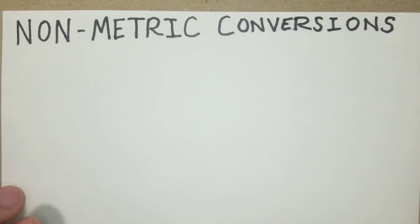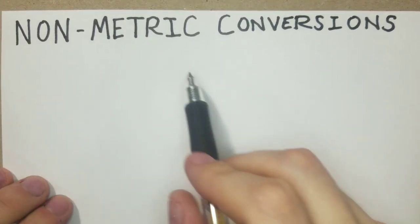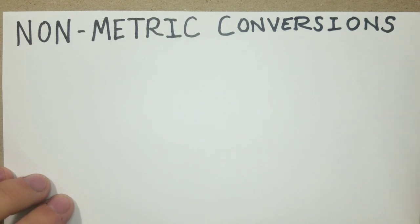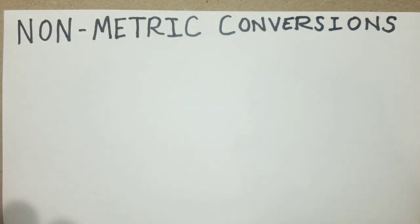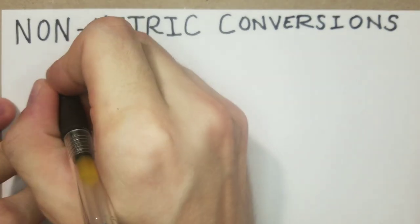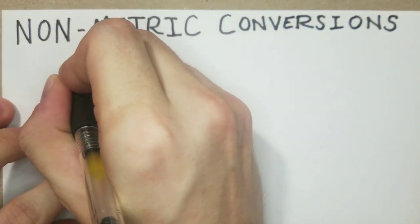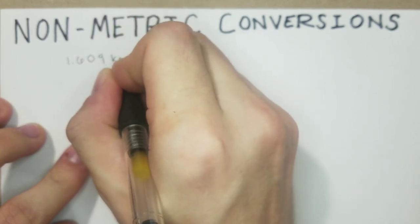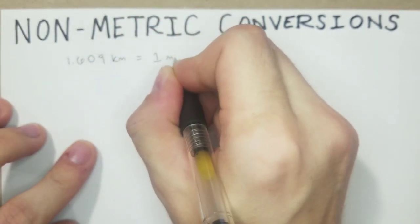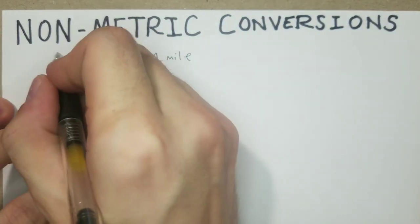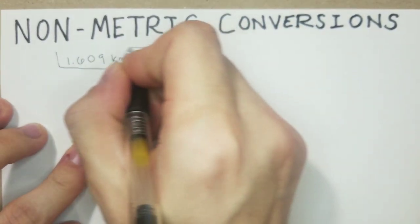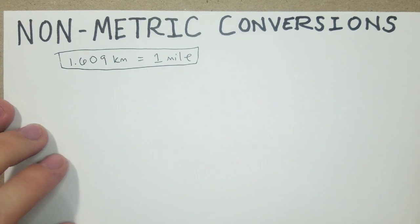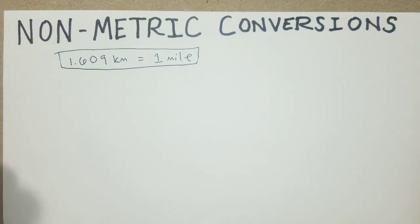How's it going guys? I've got a couple more conversions, but these ones are non-metric. Typically when I've had to do these problems, my professor has given me one type of given. So for example, for these problems, 1.609 kilometers is equal to 1 mile. And that right there is going to help us solve the following problems.